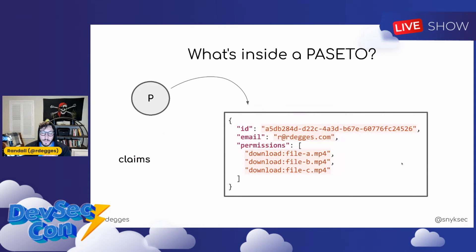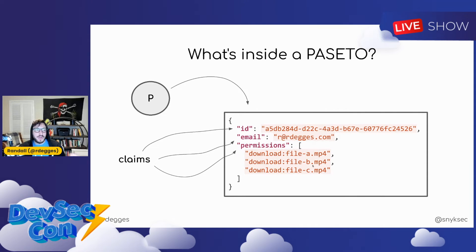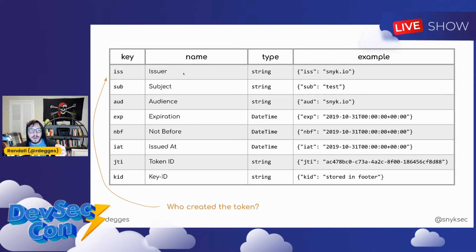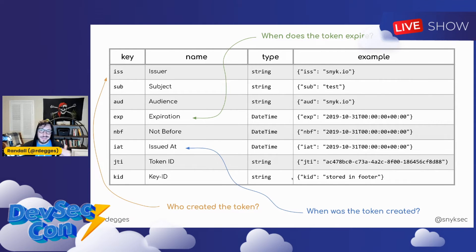What's inside of Pasetos? It's just JSON data, and you have claims embedded in these things. In the Paseto specification we call them claims — each JSON key is a claim. So a Paseto might have an ID claim, an email claim, a permissions claim. There are also reserved claims you have to use according to specific definitions, such as the ISS claim (the issuer — who created this token), an expiration claim, an issued-at claim, and others. These core claims let you properly communicate using the same standard.